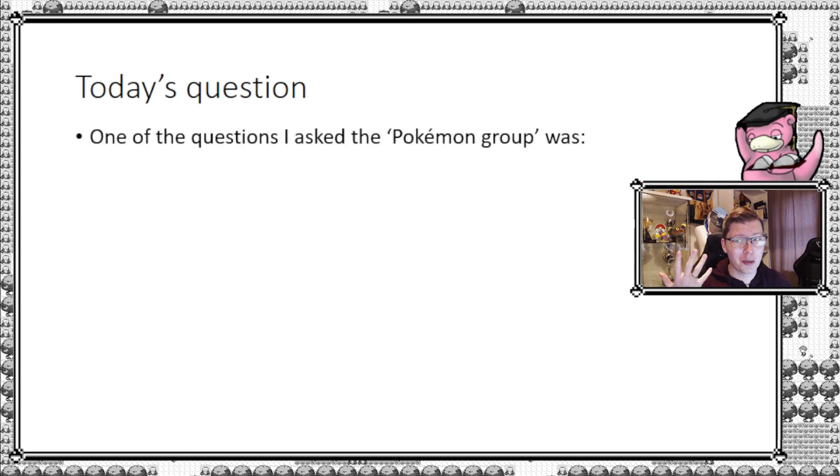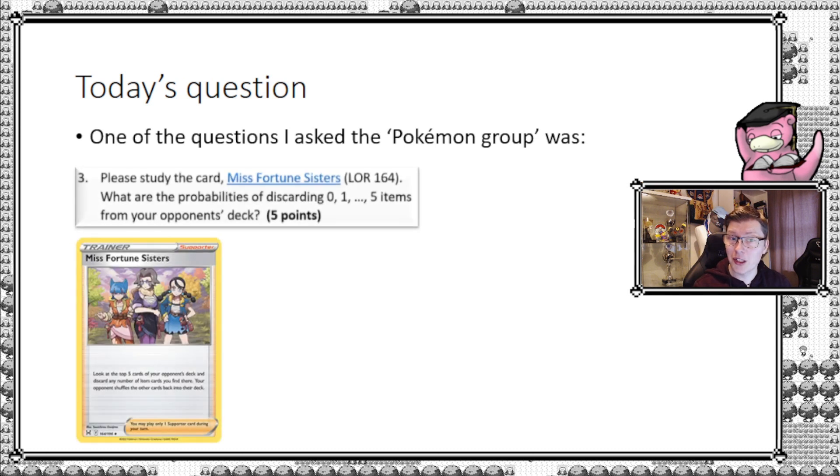Let's dive into the specific topic for today, which is today's question. One of the specific questions I gave the Pokemon group was: please study the card Misfortune Sisters, the one you see over here. What are the probabilities of discarding zero, one, two, three, four, five items from your opponent's deck?